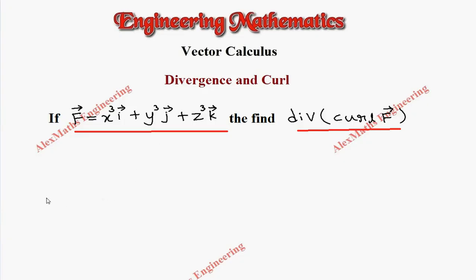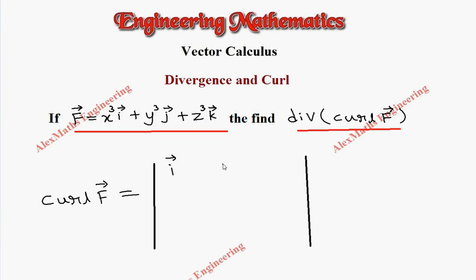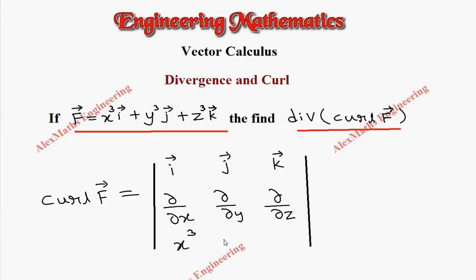For the first part, let's evaluate curl F vector, which is nothing but we have to open a determinant. In the determinant, the first row is filled with i vector, j vector, and k vector. The second row is ∂/∂x, ∂/∂y, ∂/∂z. In the third row, the components of F, which are x cube, y cube, z cube.